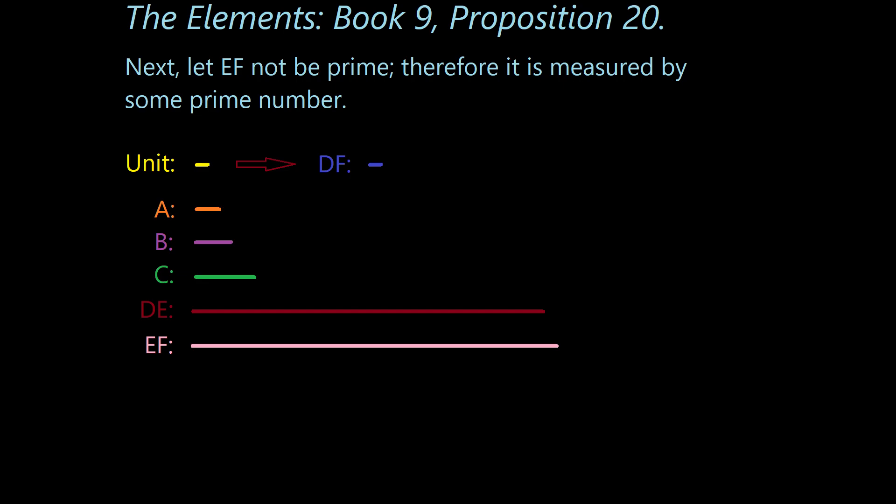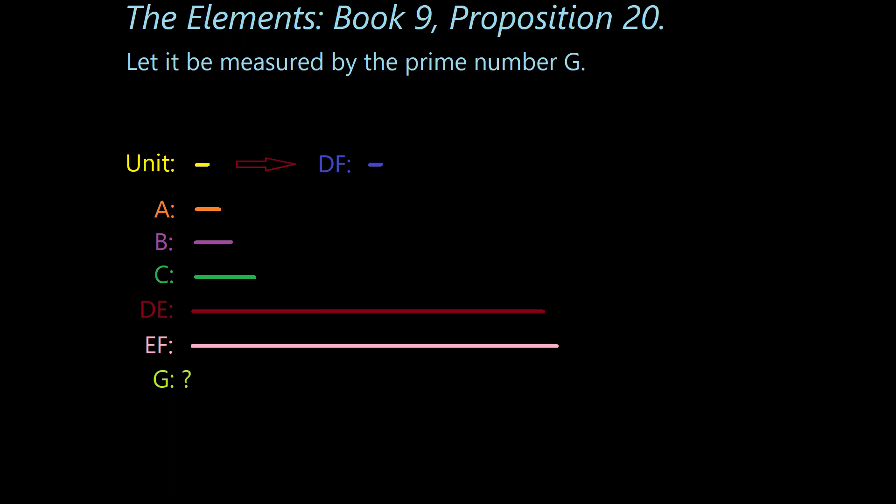Now, we don't know what number EF represents at this point. But the next step does give us a variable name for it. So we continue. Let it be measured by the prime number G. Now, again, we don't know how long G needs to be. So I'm leaving the actual line as a question mark here. We can draw it out later if we find out what it does represent. But for now, let's just see what other conclusions we can draw at this point in the argument. The next step Euclid gives is: I say that G is not the same with any of the numbers A, B, C.